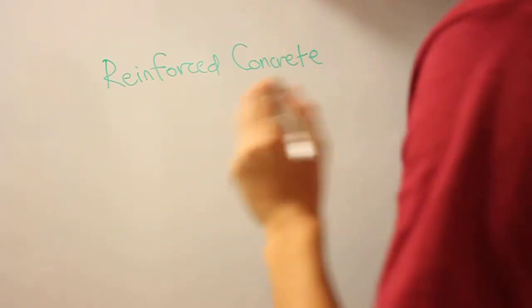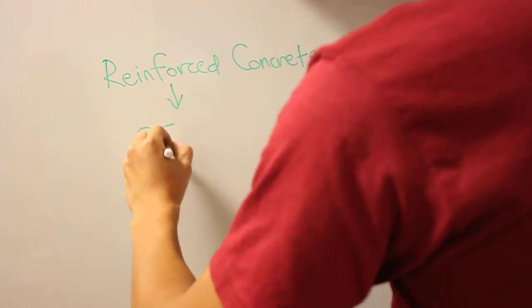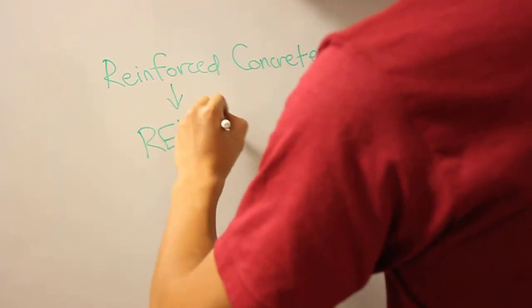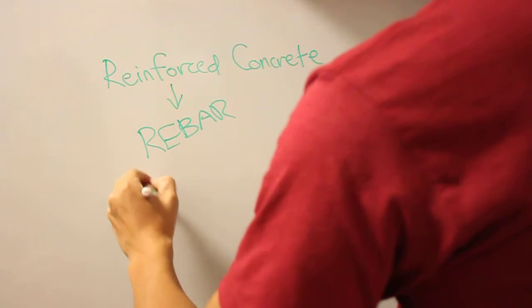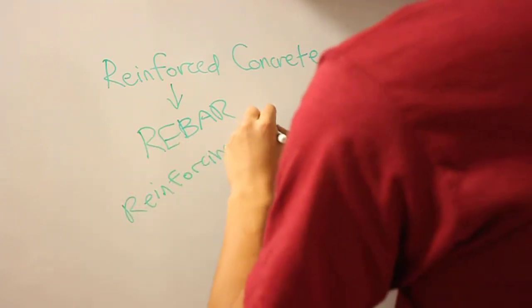What reinforced concrete is, is essentially concrete reinforced by rebar. And rebar is short for reinforcing bars. That's kind of redundant. But important to note is that these are steel bars.